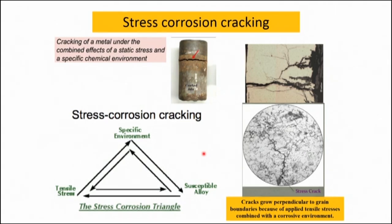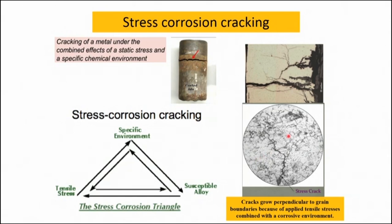Stress from any source — either external or internal — combined with corrosive species in the environment leads to failure by stress corrosion cracking. Looking at the microstructure of a stress corrosion cracked product, this type of corrosion usually proceeds by intergranular fashion, though it may also proceed through transgranular fashion. The mode of failure is usually brittle in nature.